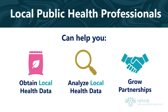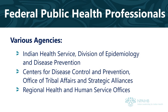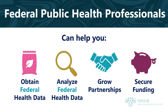The U.S. government works through various agencies to improve the health of people in the nation. For example, the Indian Health Service's Division of Epidemiology and Disease Prevention, the Centers for Disease Control and Prevention's Office of Tribal Affairs and Strategic Alliances, and regional health and human services offices. They can help you obtain federal data so you can analyze it, analyze federal health data for you, provide tailored reports, grow partnerships and make connections, and secure funding.